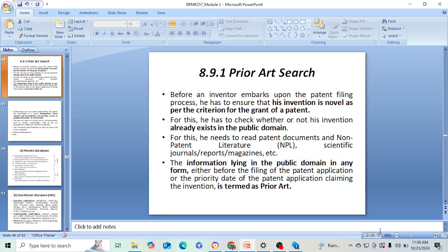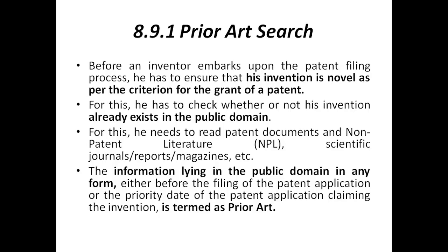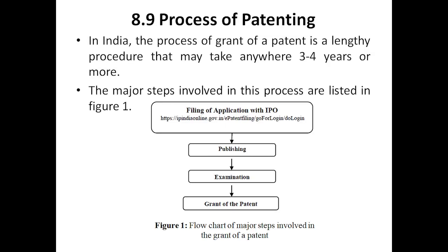Hello everyone, welcome to my channel. Today we are going to discuss about prior art research. Under the patent process, the four major steps are: filing of application with IPO, publishing, examination, and grant of the patent. These are the four major steps that we discussed in the previous class.